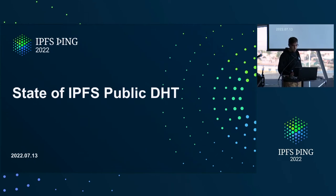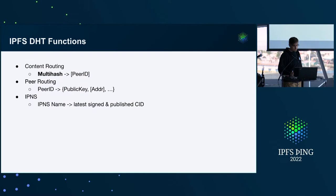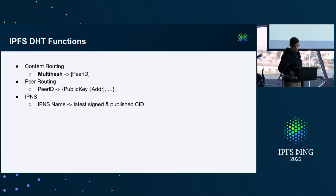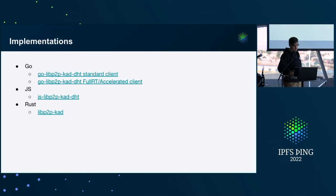We're going to talk about the public DHT. To review what Juan was talking about, the main functions of the DHT are converting a CID into a set of peer IDs — we're actually looking up by the multi-hash. The DHT also holds peer ID addresses and IPNS records. The main implementations are two Go implementations used in Kubo: the standard client and the accelerated full routing table client, plus the JavaScript and REST implementations.